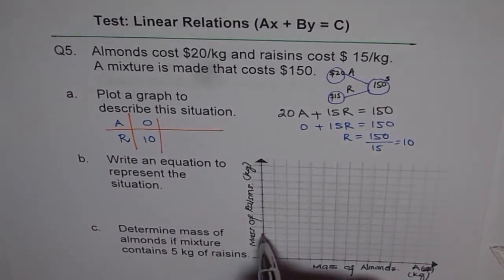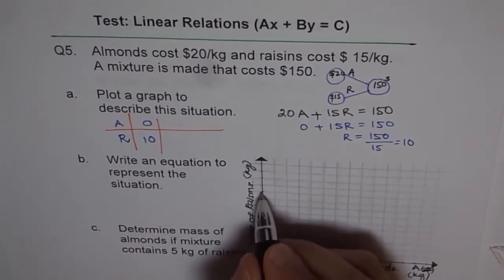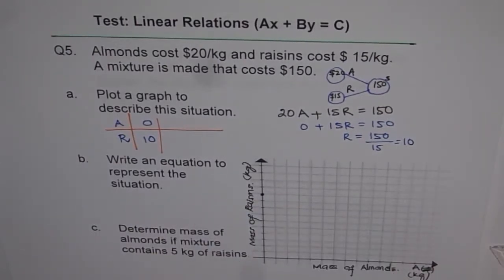So A is 0 and R is 10. 1, 2, 3, 4, 5, 6, 7, 8, 9, 10. So that becomes our Y intercept.